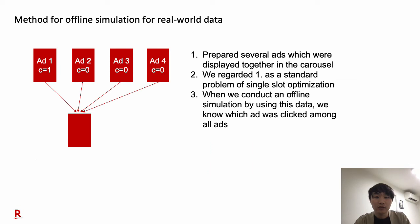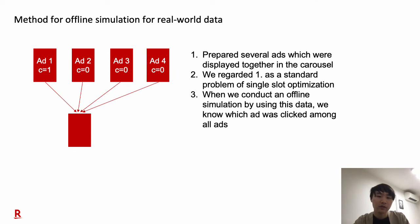Next, I'll talk about the method we used for offline simulation. First, we prepared several ads which were displayed together in a carousel. We then regarded this as a standard problem of single-slot optimization. When we conducted offline simulation using this data, we knew which ad was clicked among all ads. Note that we are aware there is a series of research about off-policy evaluation. As future work, we are applying doubly robust and inverse probability weighting to our algorithm.